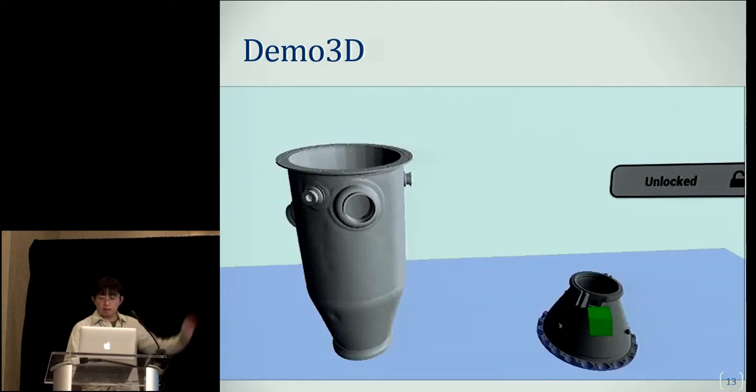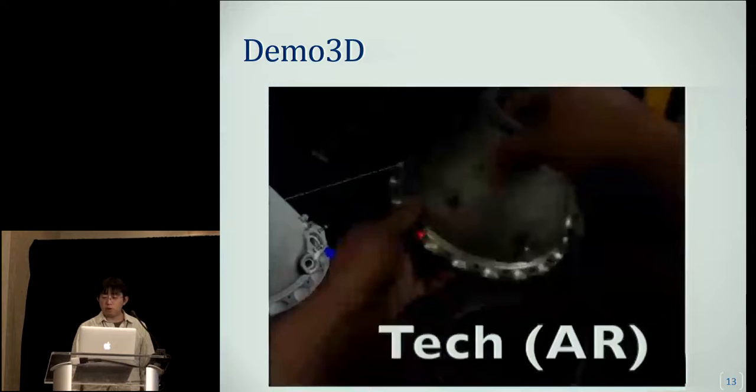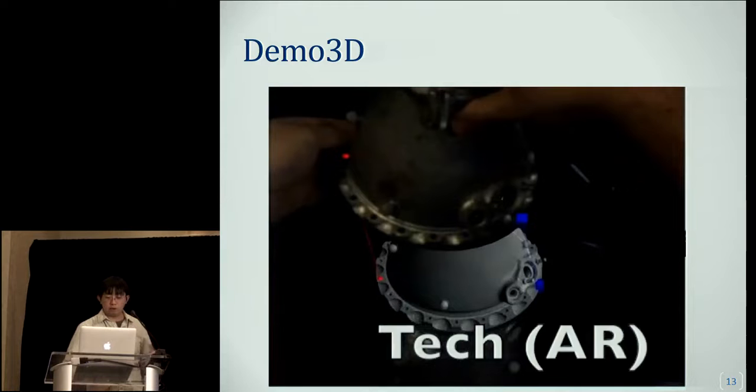In Demo3D, the second technique, the SME simply picks up a virtual replica and aligns it with a virtual proxy to show how they should fit together. Then the local user sees the virtual replica aligned in their environment and will try to match the pose with its corresponding physical object.